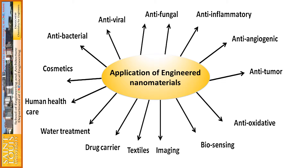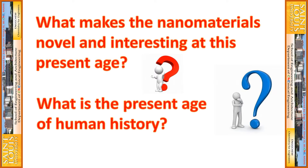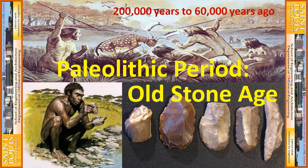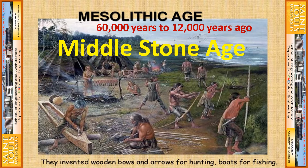What makes nanomaterials novel and interesting at this present age? To understand the present age of human history, we go back to man's history. From 200 years to 60,000 years ago we have the Paleolithic period, or the Old Stone Age. From 60,000 to 12,000 years ago is the Mesolithic Age — the Middle Stone Age — wherein man started to invent wooden tools including bows and arrows for hunting.